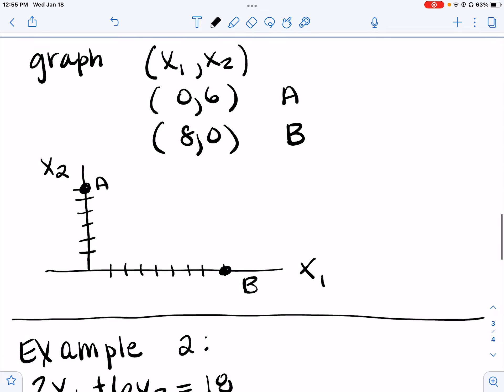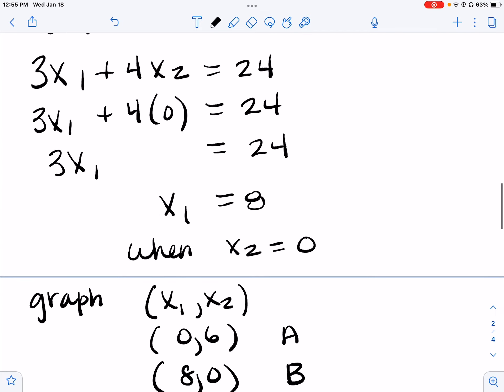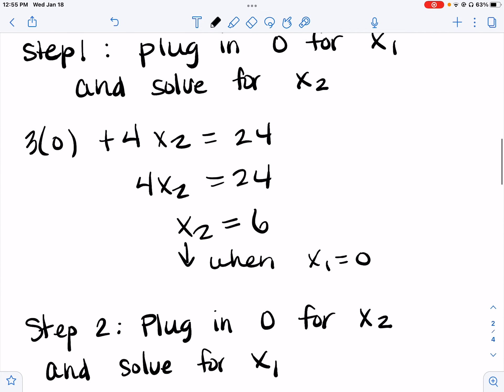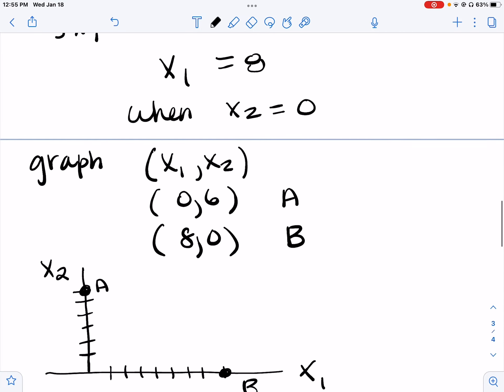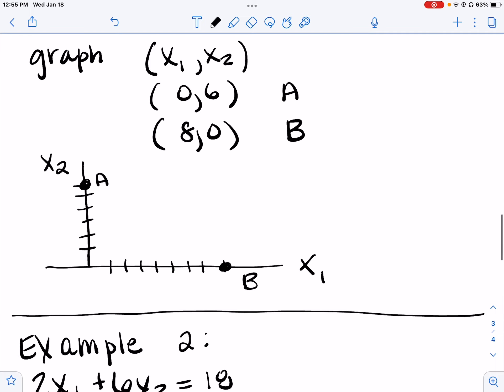Okay, so what does that give us? Our first point was x1 is 0, x2 is 6. And our second one, x1 is 8 and x2 equals 0. So we're going to plot those.